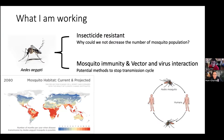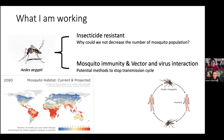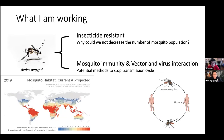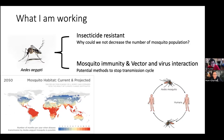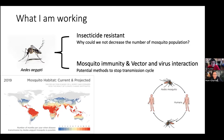I'm working on Aedes aegypti, which is one major vector around the world, especially for viruses. They can transmit dengue virus, Zika virus, chikungunya, and yellow fever — those viruses are all majorly carried by them. On the world map, you can see a prediction of the Aedes aegypti mosquito habitat. Based on the year, they start to expand because of global warming, so they are coming more close to us. Unfortunately, we expect disease will be more severe in the coming years.